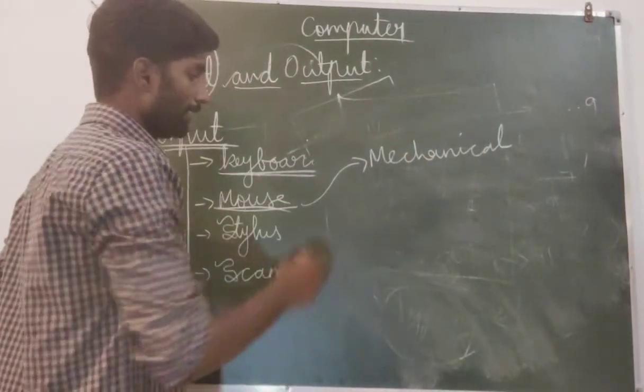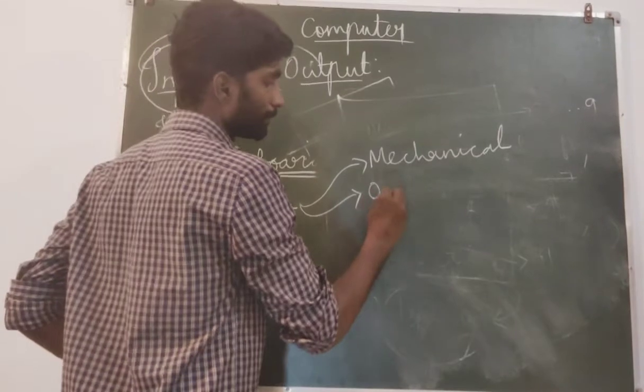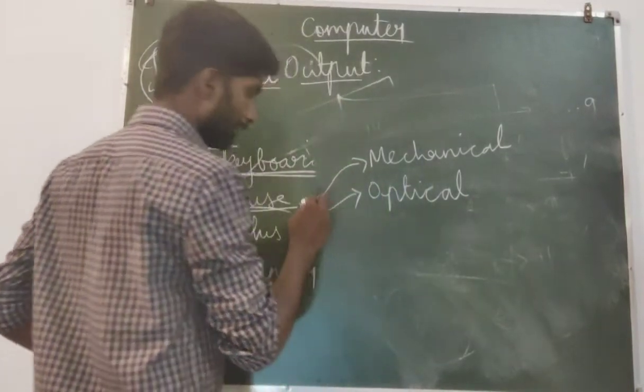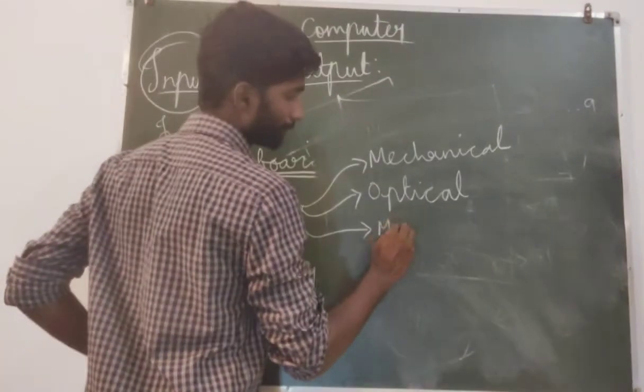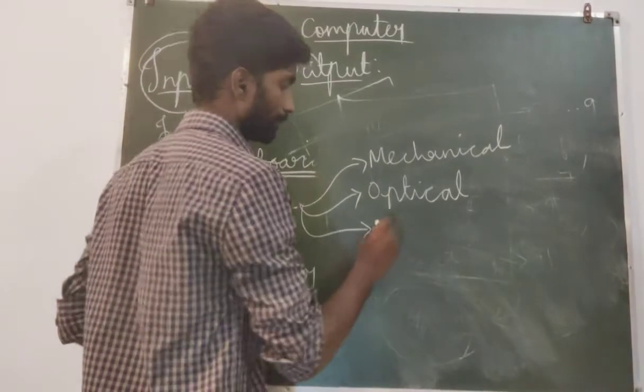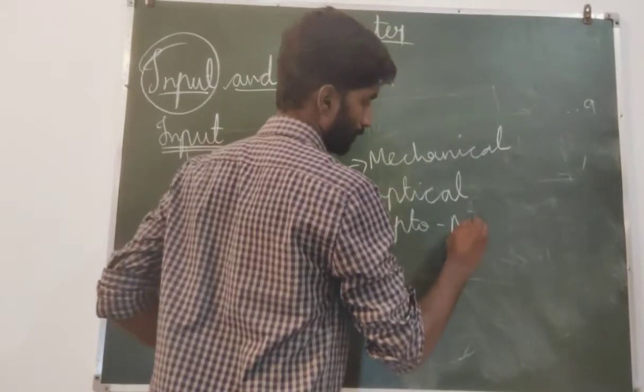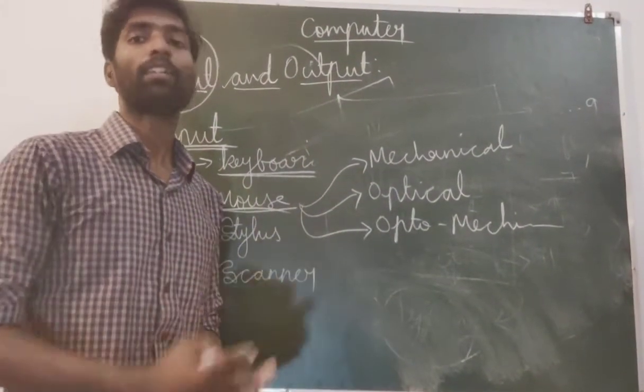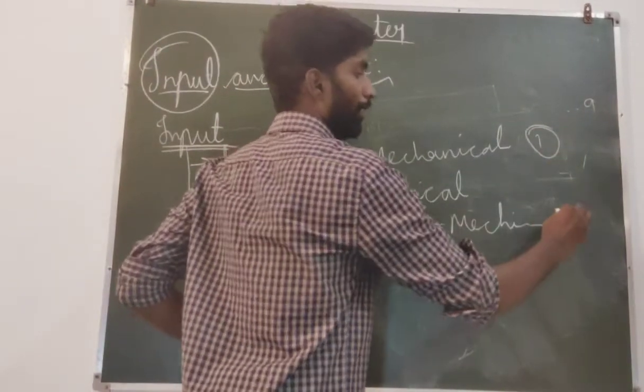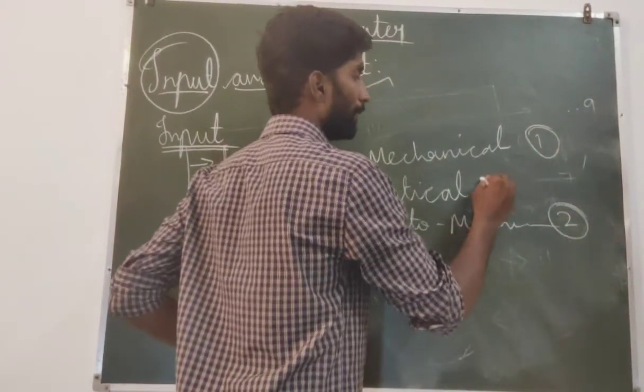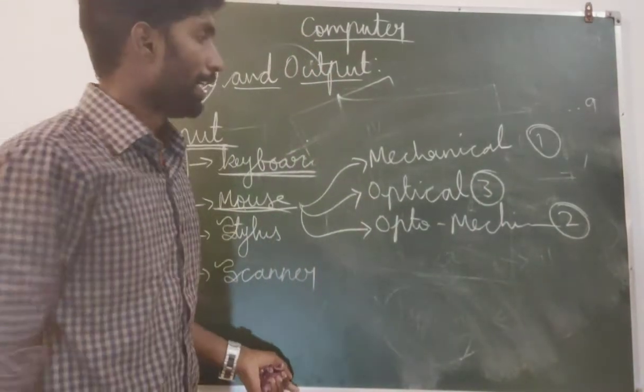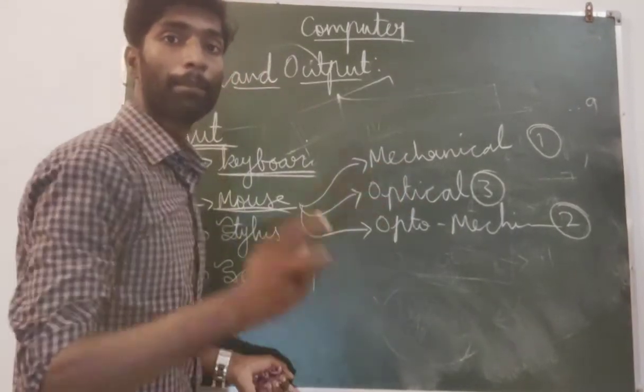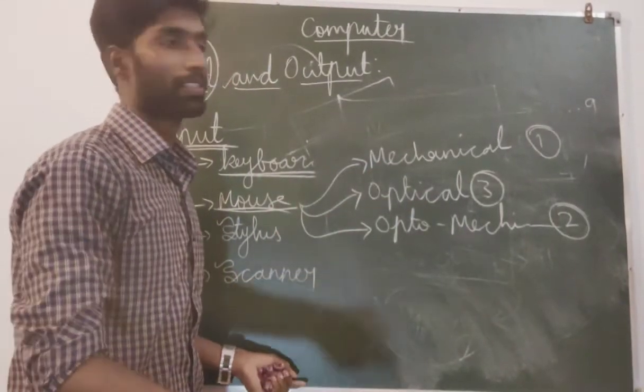In mouse, whatever you are seeing nowadays, it will come under only three types of categories. First one is mechanical, second one is optical, and third one is optomechanical. If I have to write in an order way, mechanical will come first, optomechanical will come second, and third will come optical mouse. But why I have written in an unorder? Because there is a reason behind that.